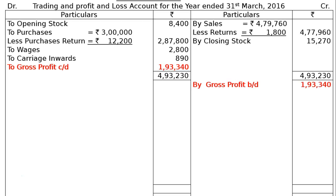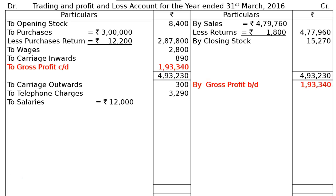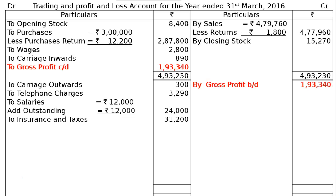Now write down the office expenses. Carriage outwards or free home delivery expenses rupees 300; telephone charges rupees 3,290; salaries rupees 12,000 plus outstanding salaries rupees 12,000 as per adjustment number 3 — totaling rupees 24,000 in the final column. Outstanding salaries will appear under current liabilities in the balance sheet. Insurance and taxes: rupees 31,200.